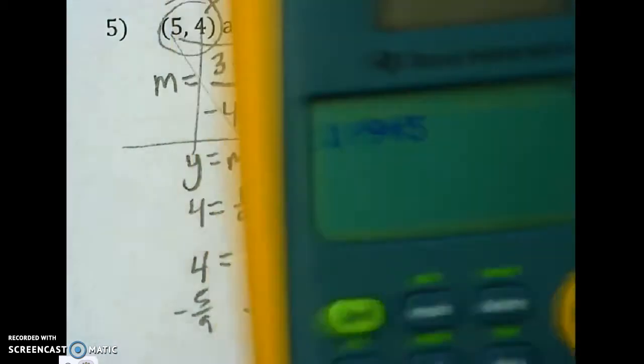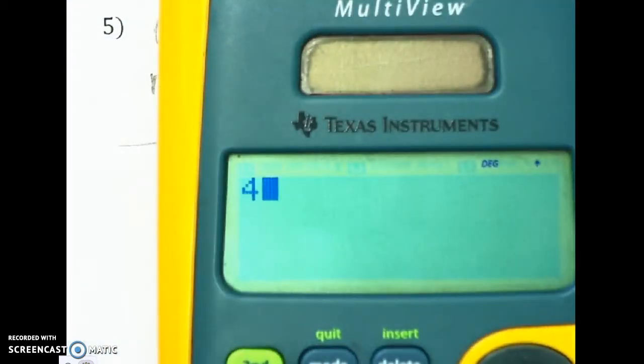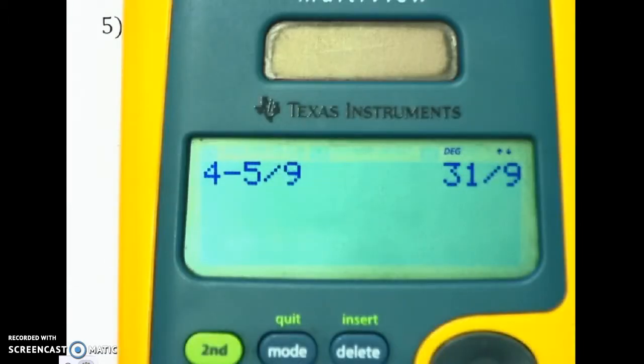So, punching in 4 minus 5 over 9. 31 ninths.